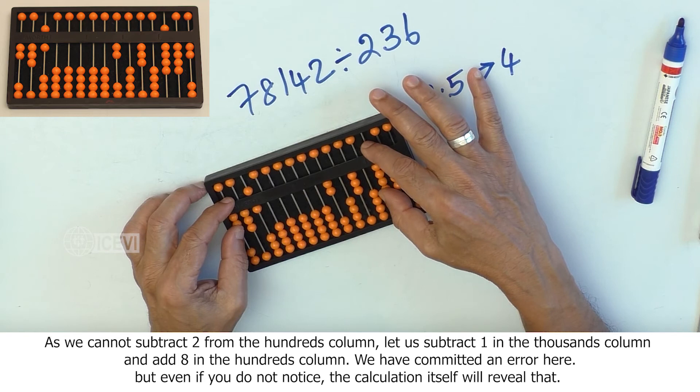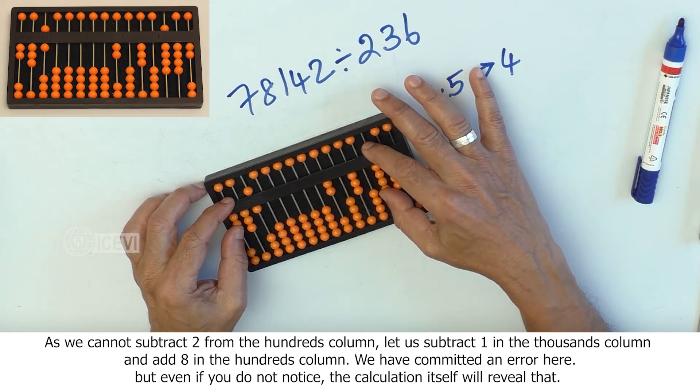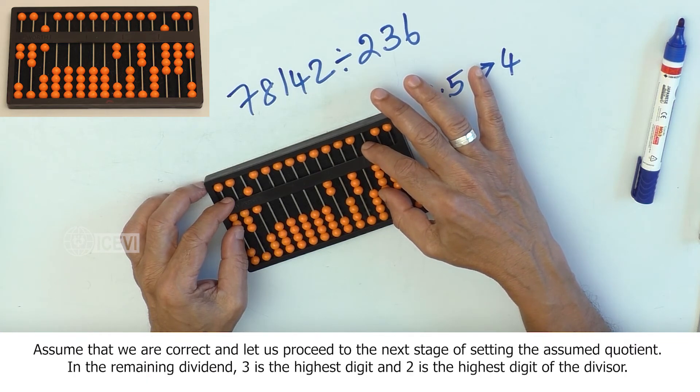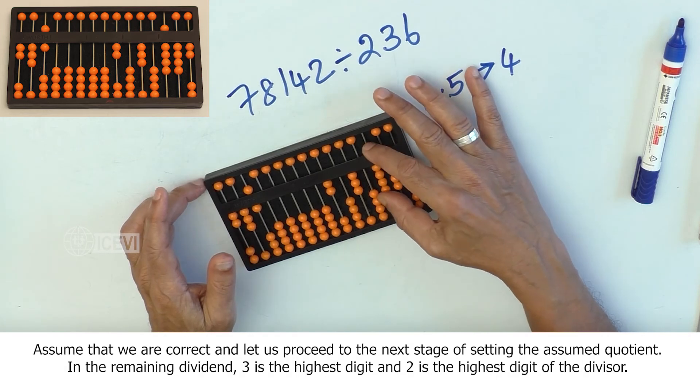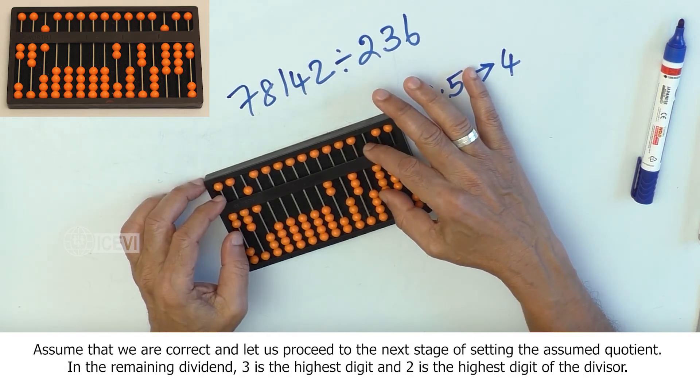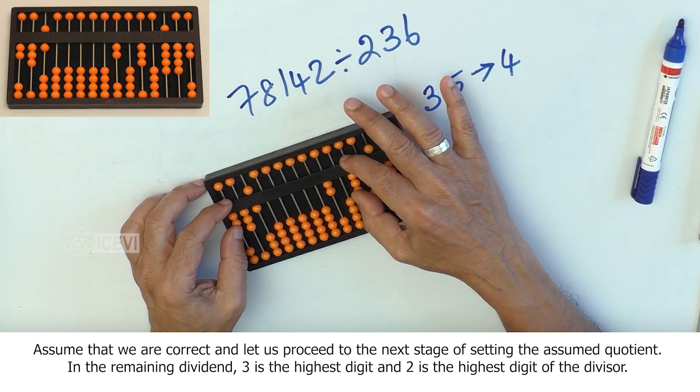We have committed an error here but even if we do not notice, the calculation itself will reveal that. Assume that we are correct and let us proceed to the next stage of setting the assumed quotient. In the remaining dividend, 3 is the highest digit and 2 is the highest digit of the divisor.